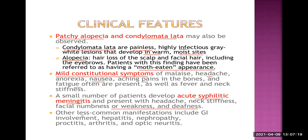Other less common manifestations in secondary syphilis include GI involvement, hepatitis, nephropathy, proctitis — which is inflammation of the rectum — arthritis, and optic neuritis. In summary, secondary syphilis is a generalized type of disease: the mucocutaneous rashes are most common, mainly macular, along with generalized painless lymphadenopathy, moth-eaten appearance of the scalp from patchy alopecia, and condyloma lata — highly infectious lesions near the upper inner part of the thigh.